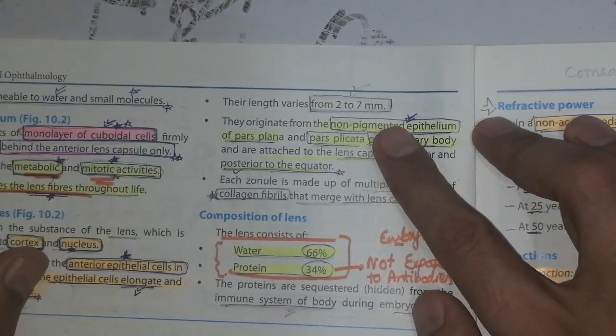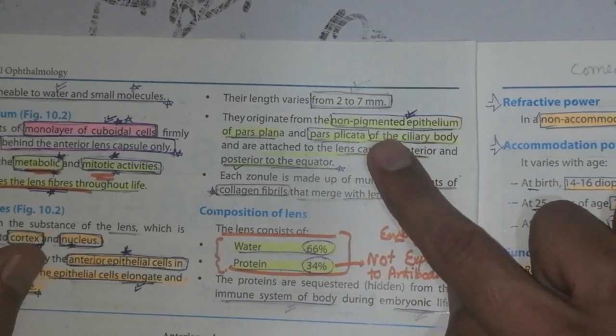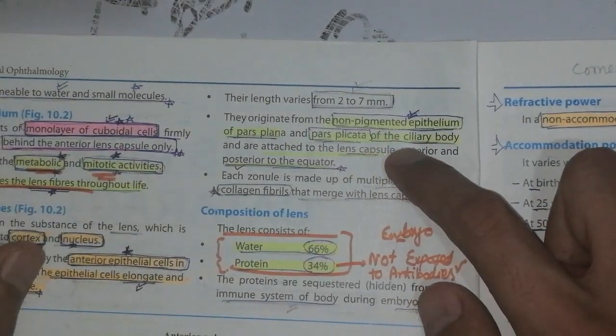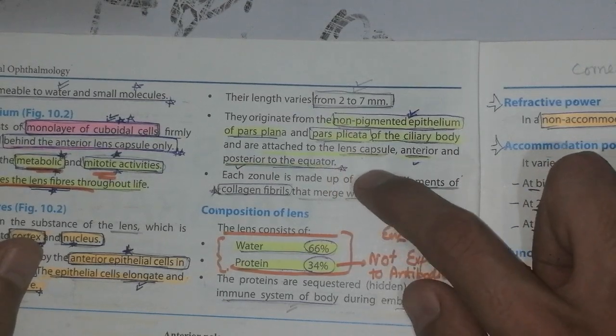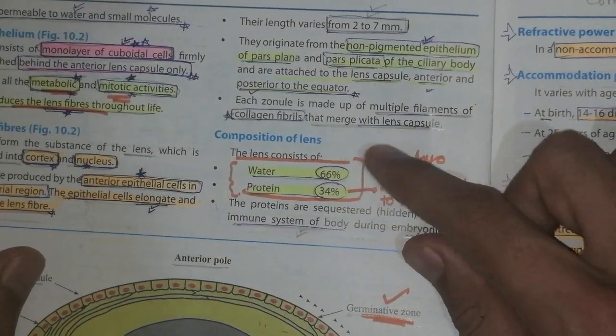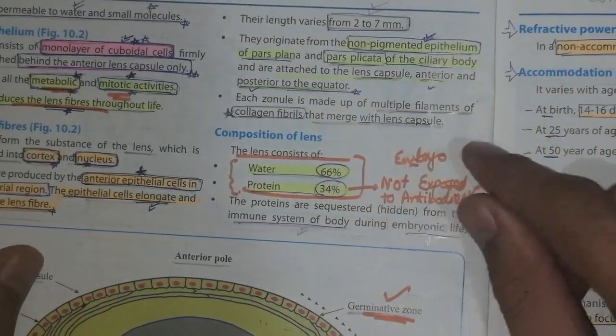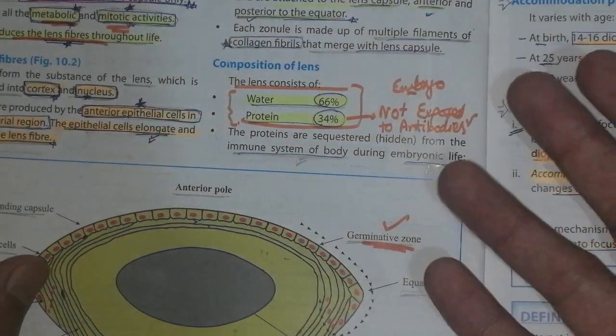The length varies from 2 to 7mm. They originate from non-pigmentary epithelium of the pars plana and pars plicata of the ciliary bodies. They are attached to the lens at anterior and posterior equator. Each zonule is made up of multiple filaments of collagen fibers and merge to form the lens capsule.